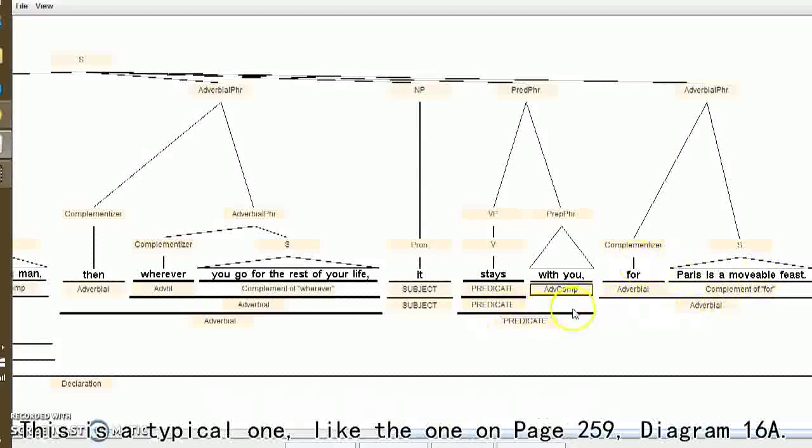Now we reach the last part of the sentence, for Paris is a movable feast, an adverbial of reason. This is a typical one, like the one on page 259, diagram 16a.